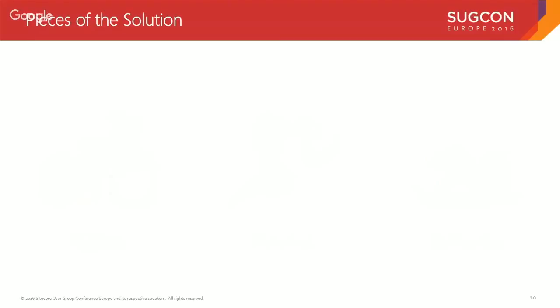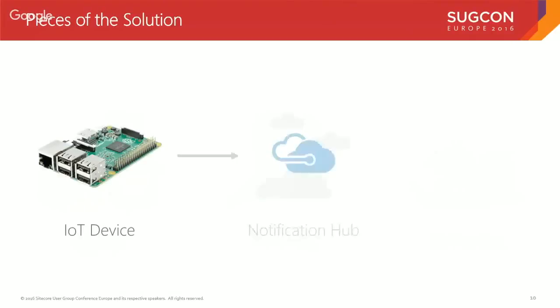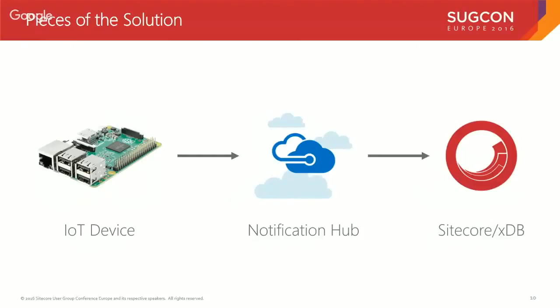After coming up with the scenario, I figured out the pieces of the solution. This solution has three pieces: the IoT device itself, Azure IoT Hub (I'm leveraging notification hubs in Azure), and then obviously connecting to Sitecore and the XDB.